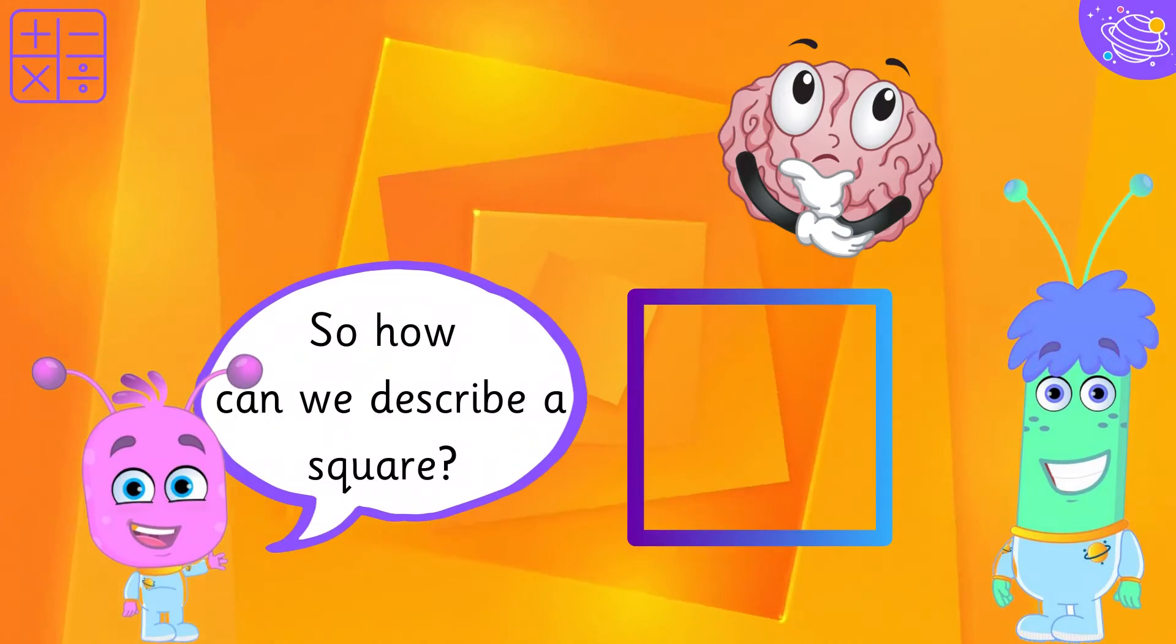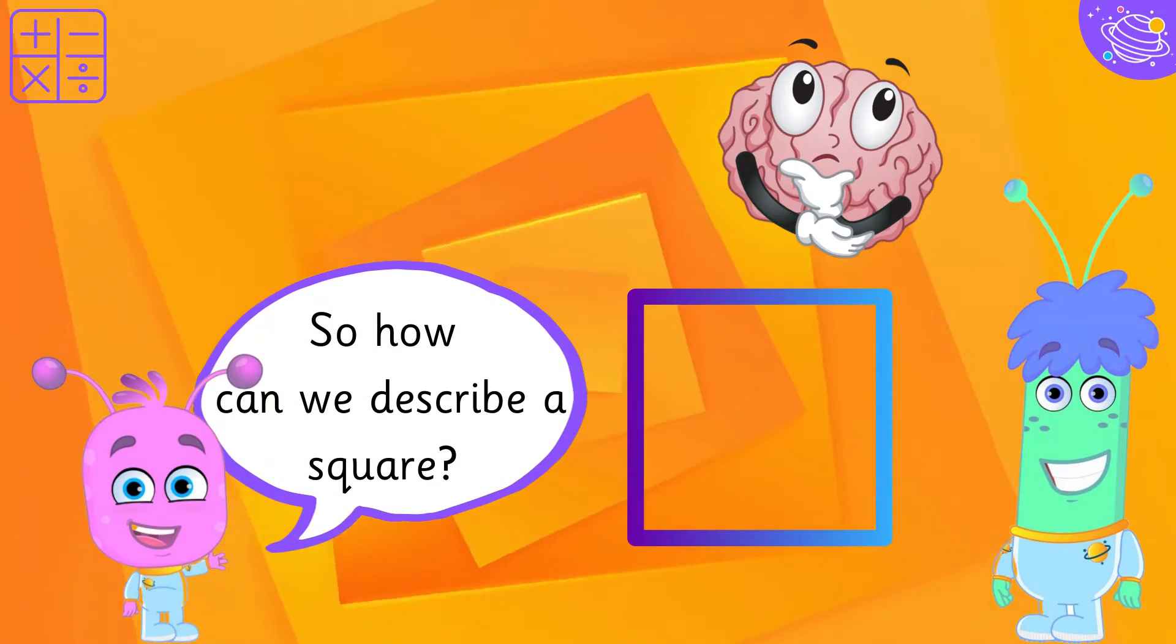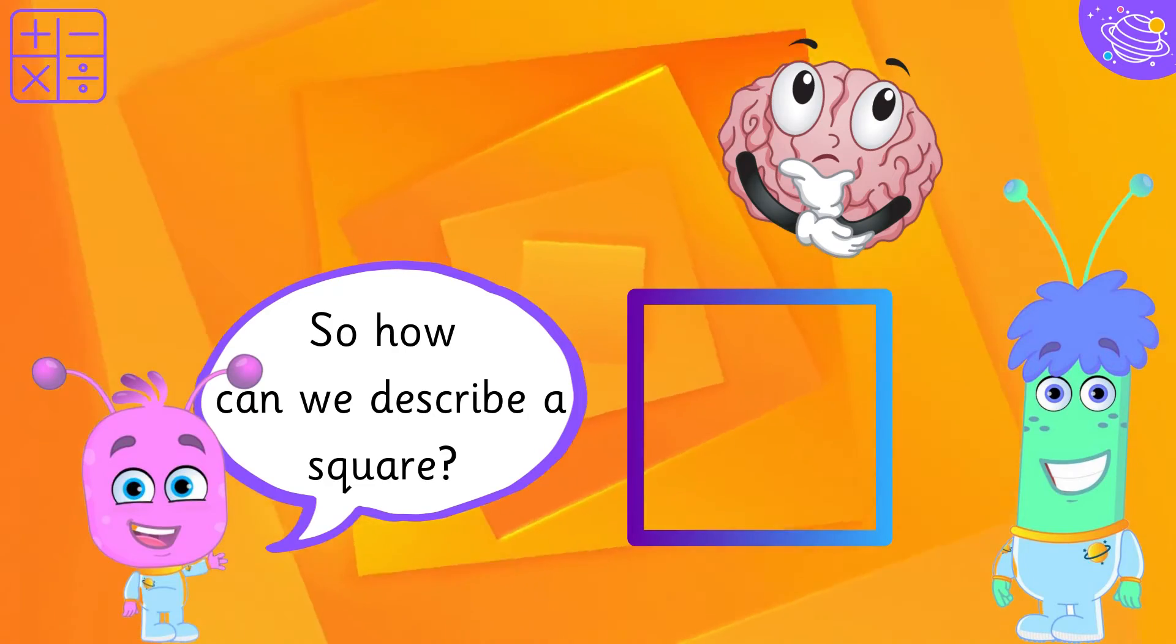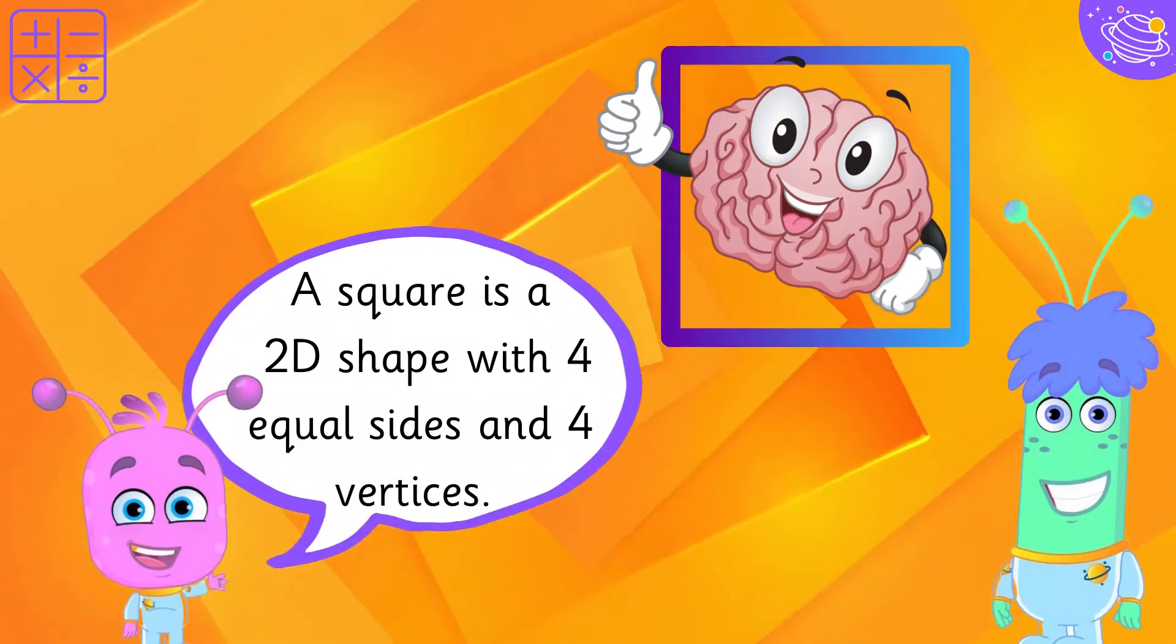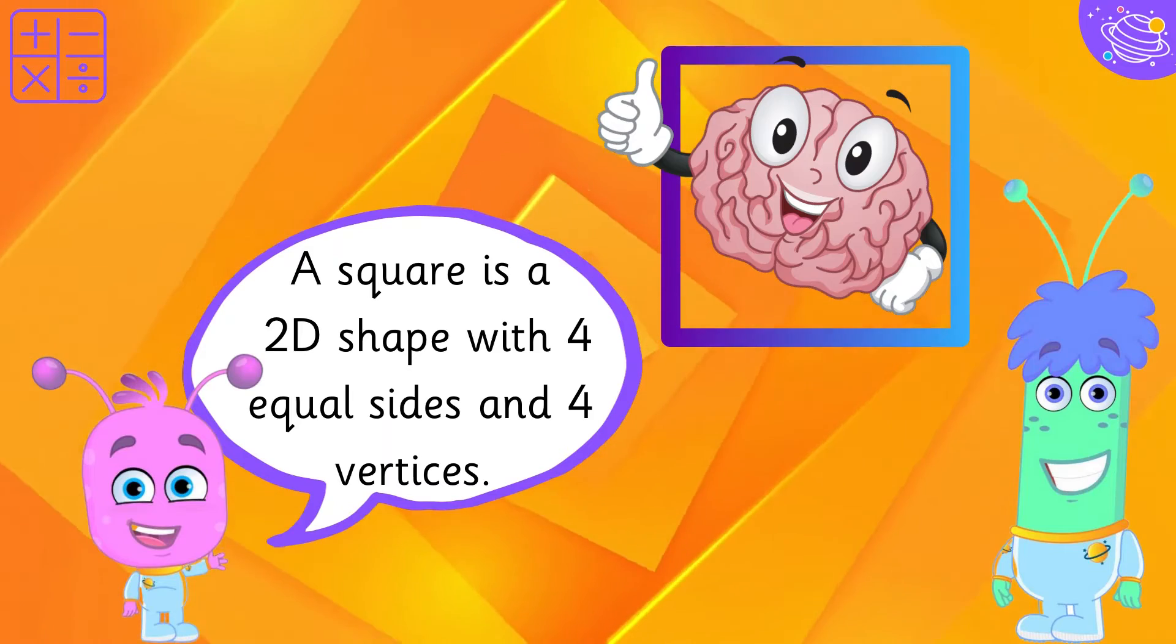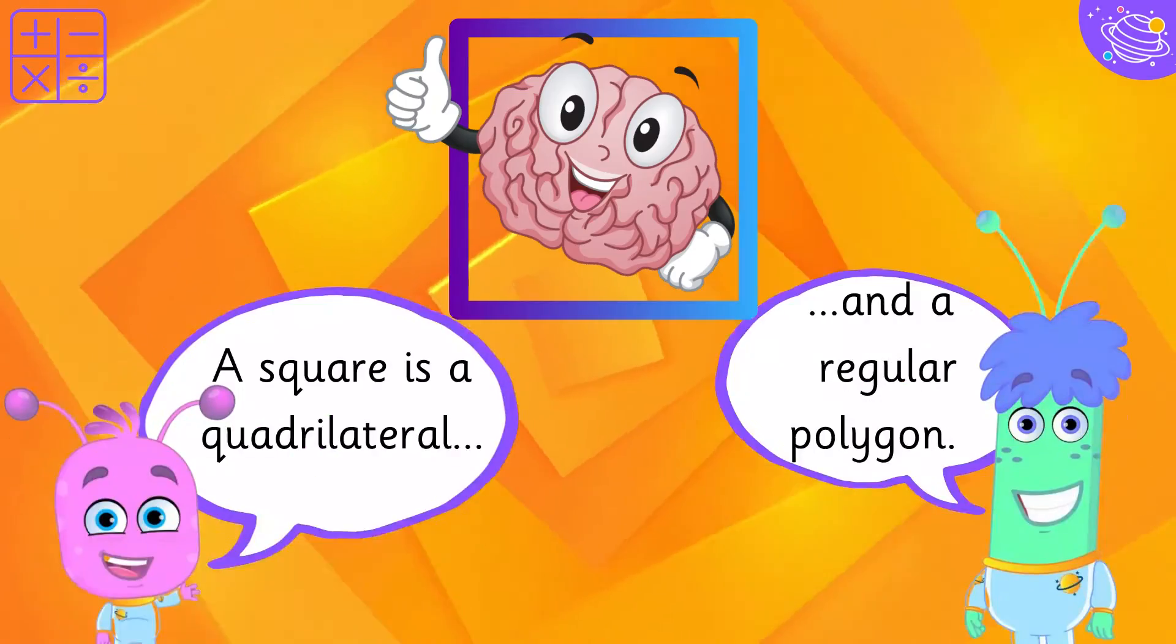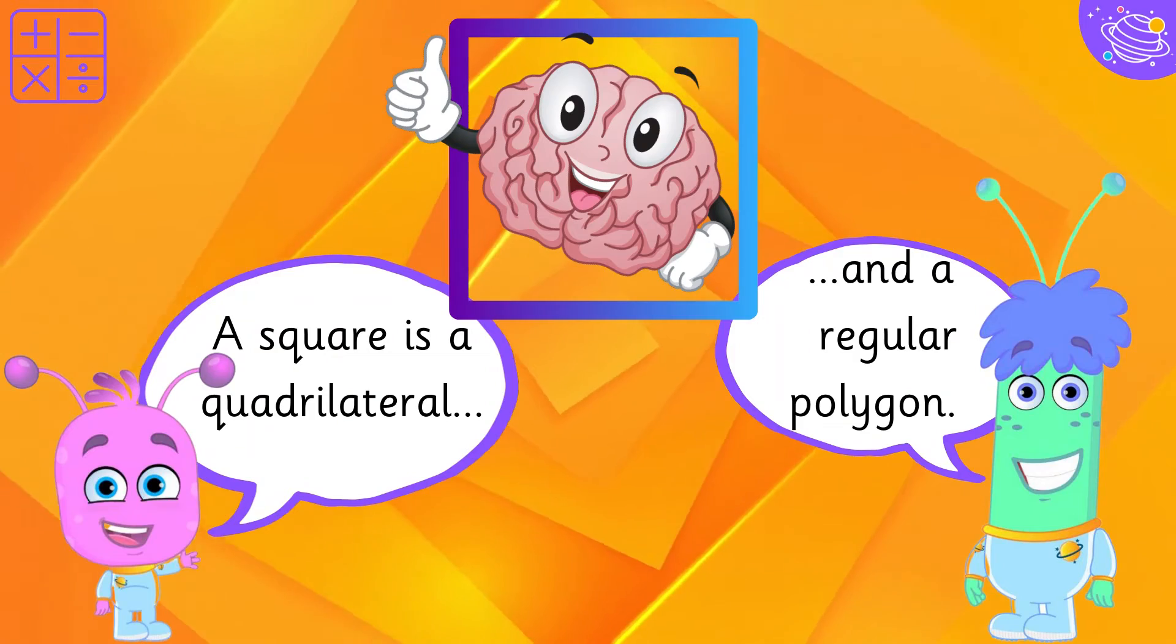So how can we describe a square? A square is a 2D shape with 4 equal sides and 4 vertices. A square is a quadrilateral and a regular polygon.